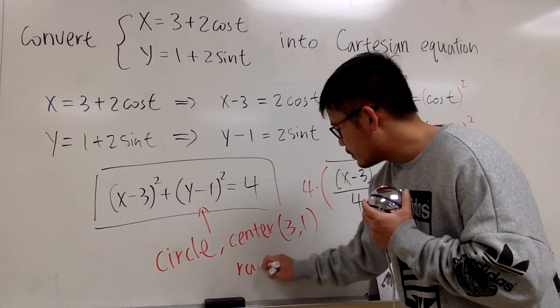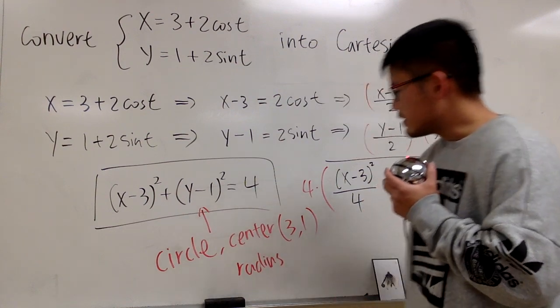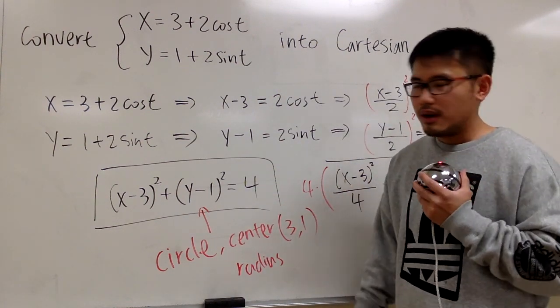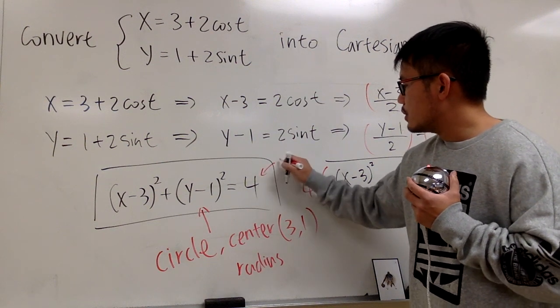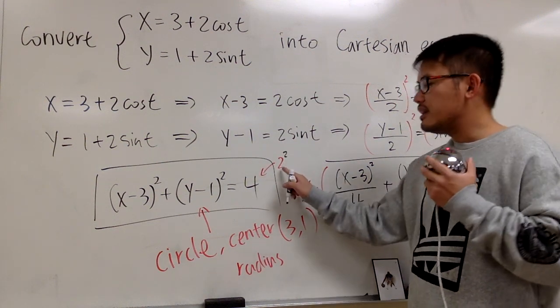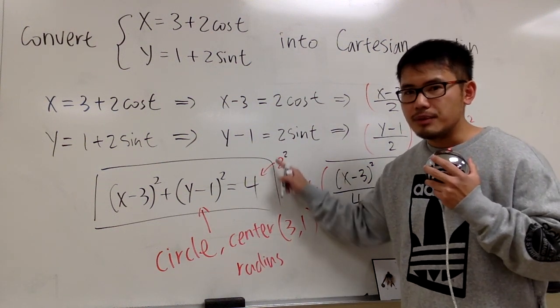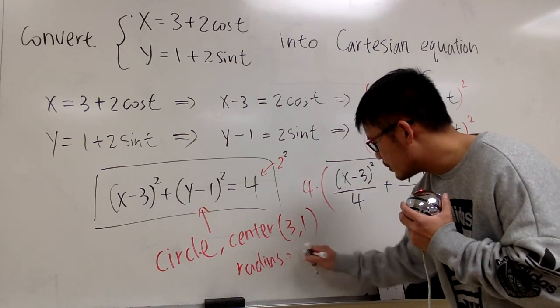The radius of the circle, look at this, don't look at this as 4. You look at this as 2 squared. And the radius is this number before you square, which is the 2. Radius is equal to 2.